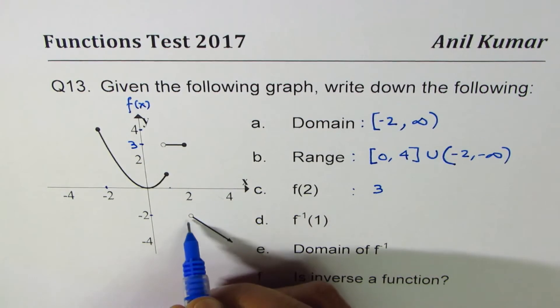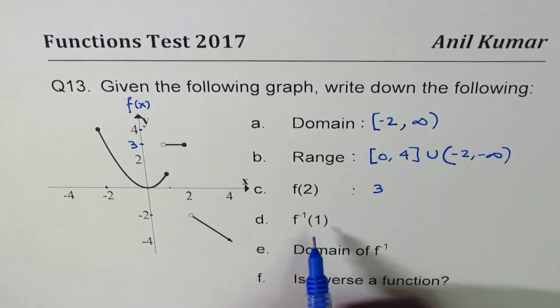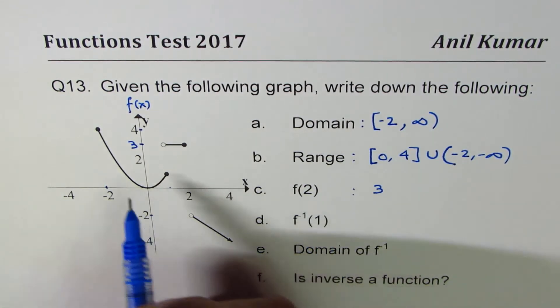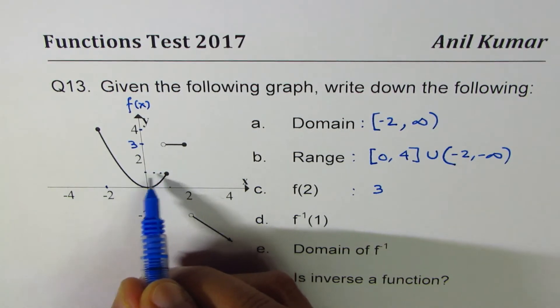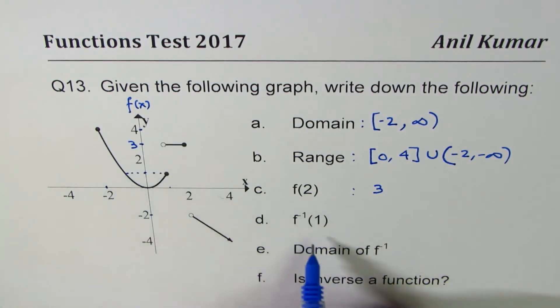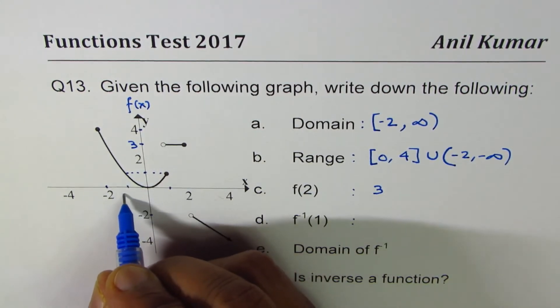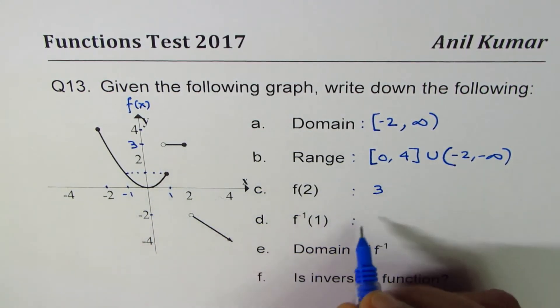Then we have f inverse of 1. That really means that for a y value of 1, what is the x value? For y value of 1, what is the x value? f inverse, so we have two x values which are plus and minus 1, so we could write this as plus and minus 1.